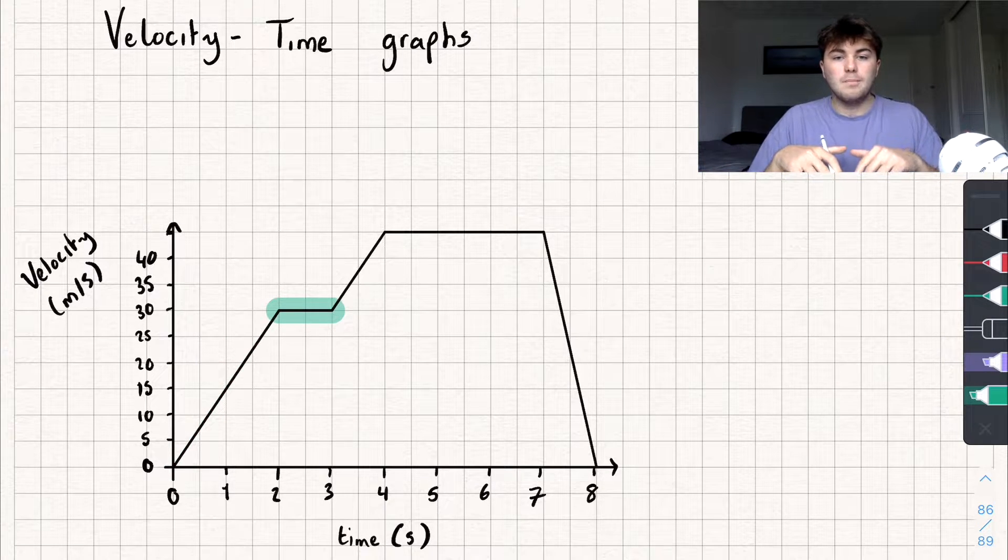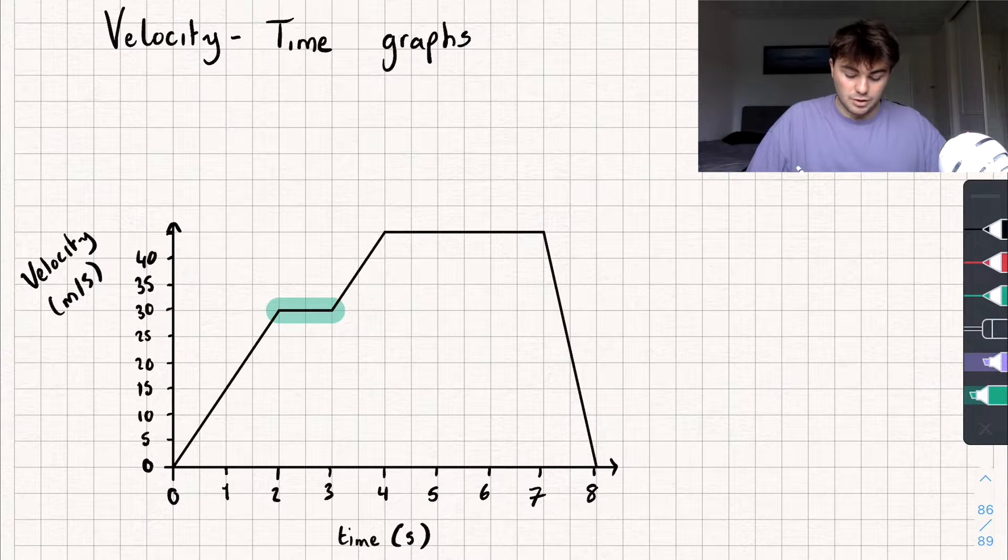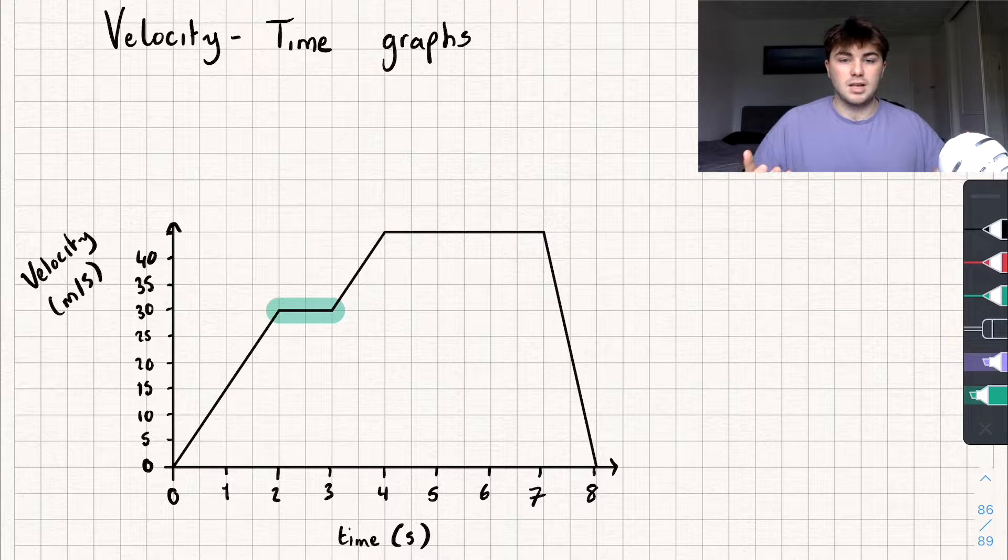If I've got a flat line like this point here, that shows me that my velocity is remaining the same. I'm travelling at a constant velocity. So for example, between 2 and 3 seconds, it's 30 metres per second.